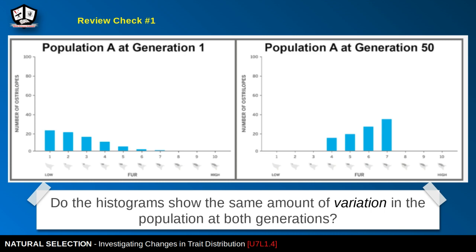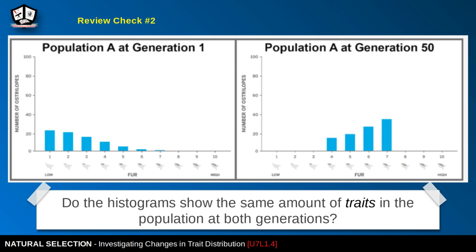Now we have a check — do you understand what's happening in these graphs? Check question number one: do the histograms show the same amount of variation in the population at both generations? Question number two: do the histograms show the same distribution of traits in the population at both generations?